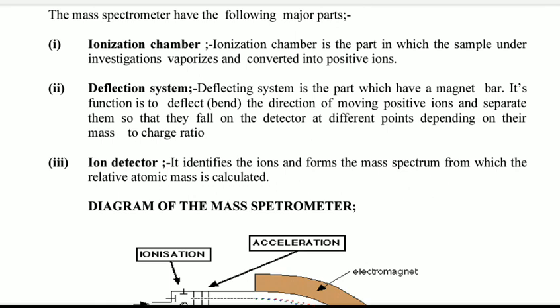They must be given ions. Ionization chamber is the part in which sample under investigation is vaporized and converted into positive ions.